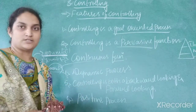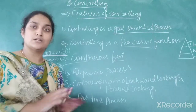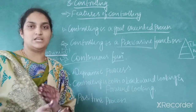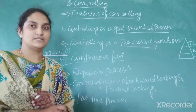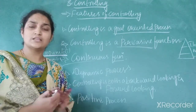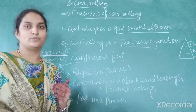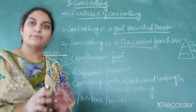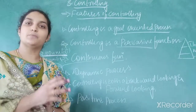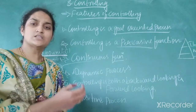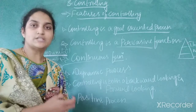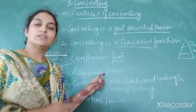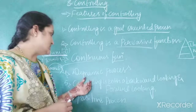The next feature is that controlling is a dynamic process. It is not rigid — instead it is flexible. Controlling is required to adopt the changes happening in the organization or in the environment, and consequently new methods and techniques have to be adopted in the process of controlling. That is why it is called a dynamic process — it will take new tools and techniques that have to be adopted whenever possible.